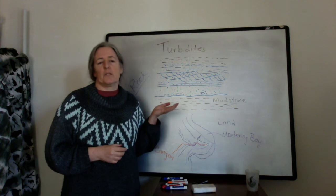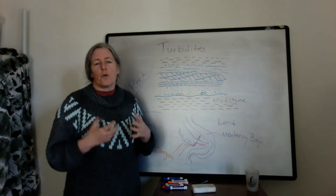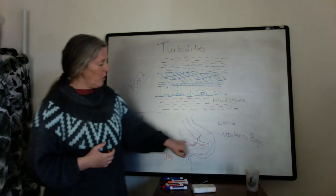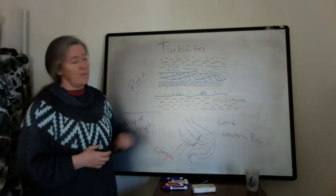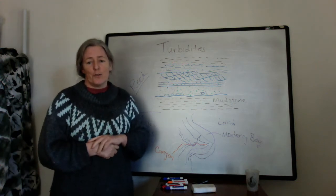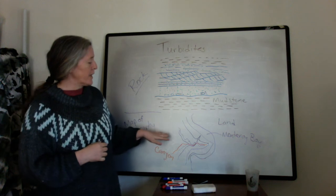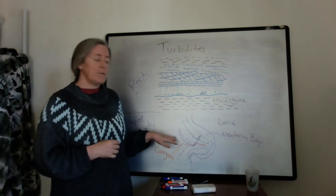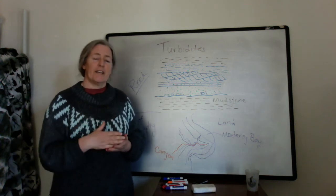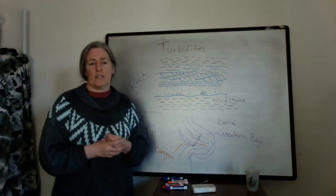Interestingly, none of the cables in the shallow water on the continental shelf itself broke, so there had to have been a process going on in the deep ocean as you went away from the coast. In 1952, Heezen and Ewing — two geologists — recognized that what was probably happening was that the earthquake had triggered a landslide that generated a turbidity current, and that current was flowing down the slope and breaking the cables one after the other.